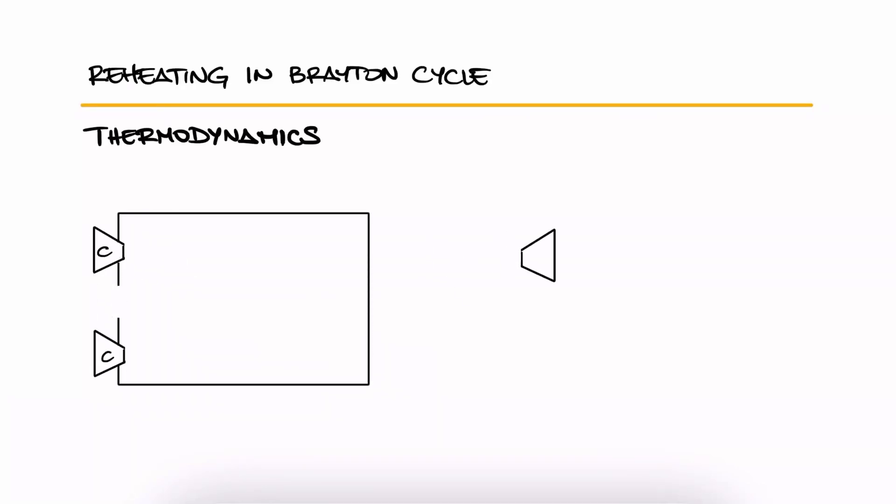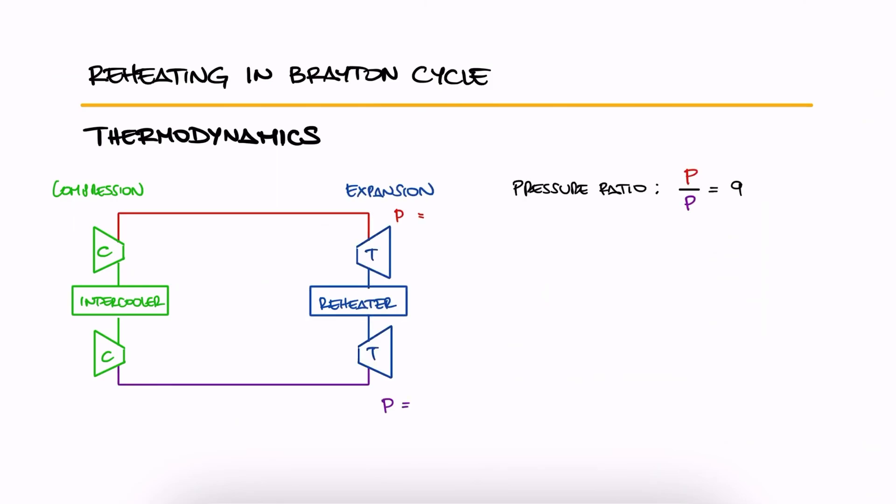An air turbine power plant with two stages of compression and two stages of expansion has an overall pressure ratio of 9. The air enters each stage of the compression at 280 Kelvin and each stage of the turbine at 1200 Kelvin. What is the power output of the turbines if the mass flow rate of air is 150 kilograms per second?